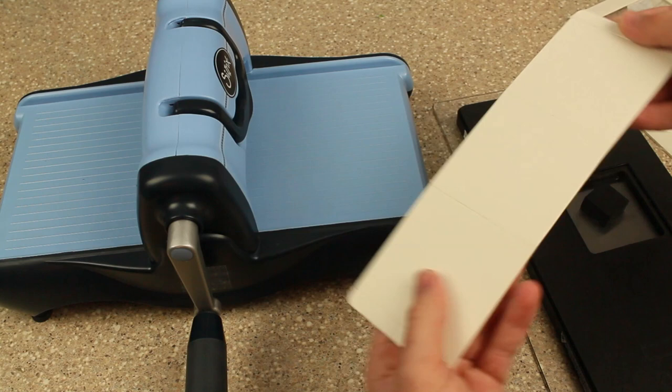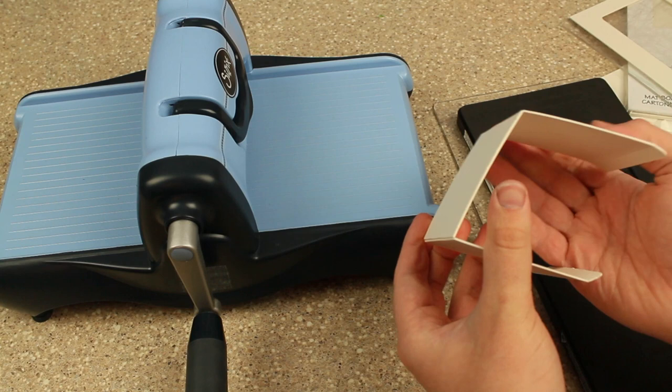And what I love about this die is it pre-scores everything for you. So you just have to fold it and the score lines are already there. One of my favorite things from Sizzix.